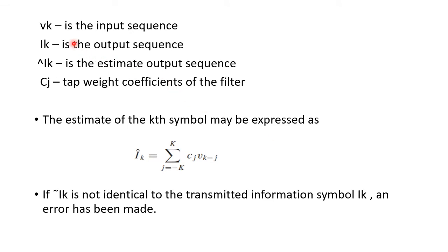Here, vk is the input sequence, ik is the output sequence, ik_cap is the estimate of the output sequence, and cj are the tap weight coefficients of the filter. The estimated k-th symbol is given by ik_cap = Σ(j = −∞ to +∞) cj · v(k−j). If ik_cap is not identical to the transmitted symbol ik, an error has occurred.